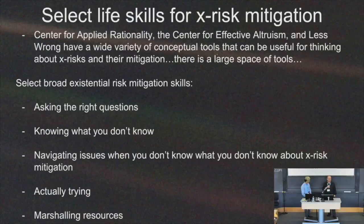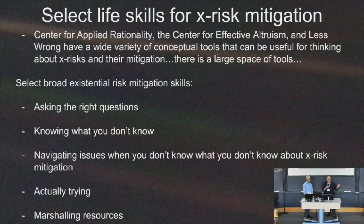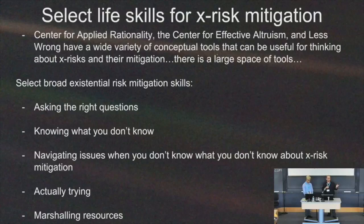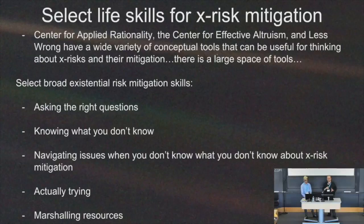There are many different types of cognitive tools and concepts relevant and useful for thinking about x-risks and how to mitigate them. Workshops by the Center for Applied Rationality have great cognitive tools — things like double-cruxing and Fermi estimates. The Center for Effective Altruism has a great website on concepts relevant for x-risks at concepts.effectivealtruism.org. Today we'll be focusing on a small number of tools: asking the right questions, knowing what you don't know, navigating existential risk issues, moving from complacency to action, and marshaling one's resources.